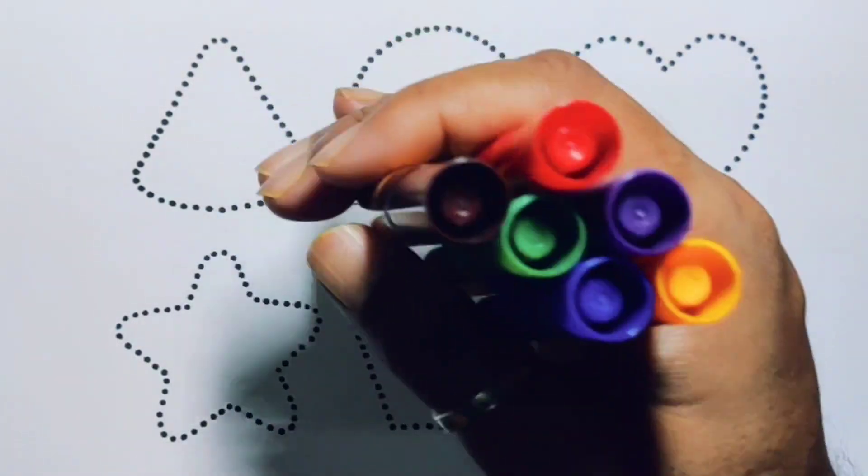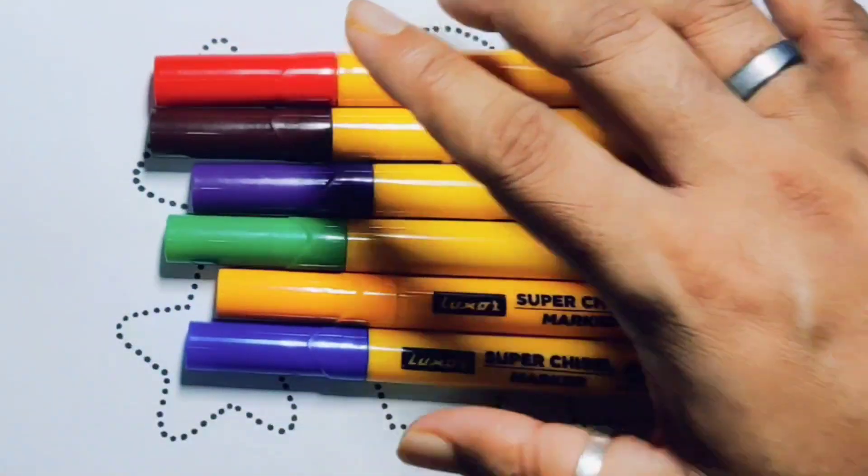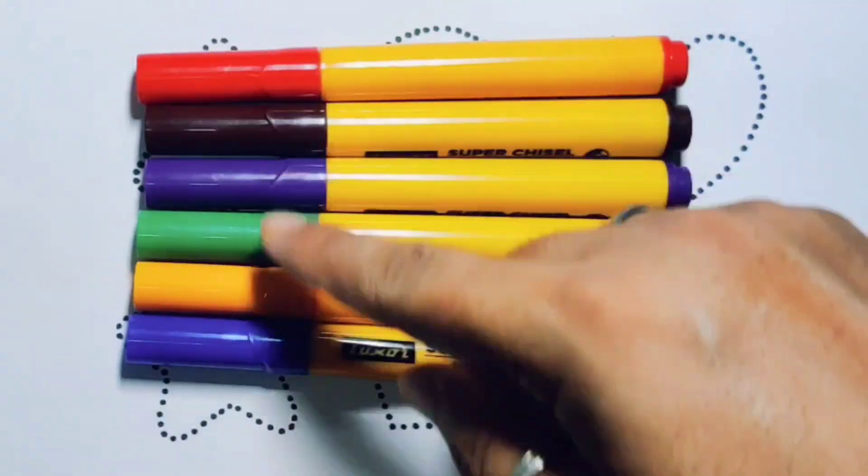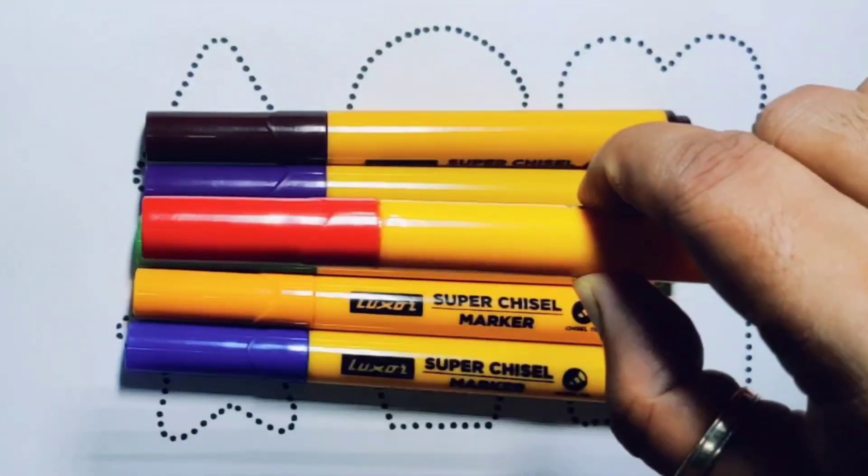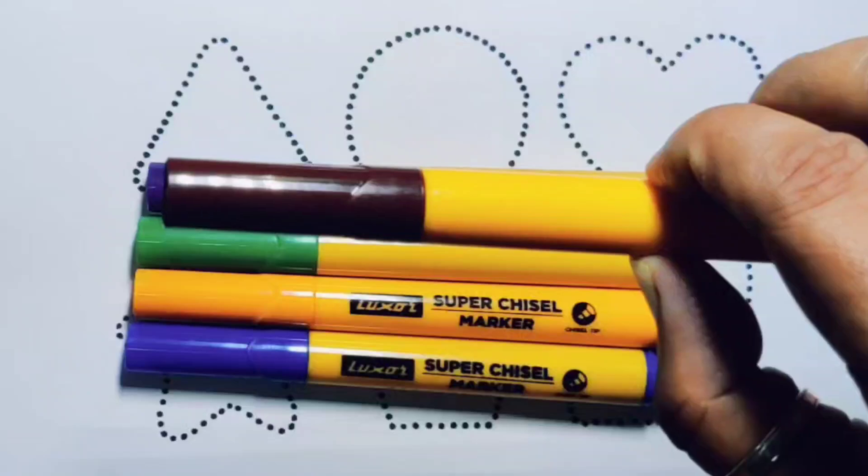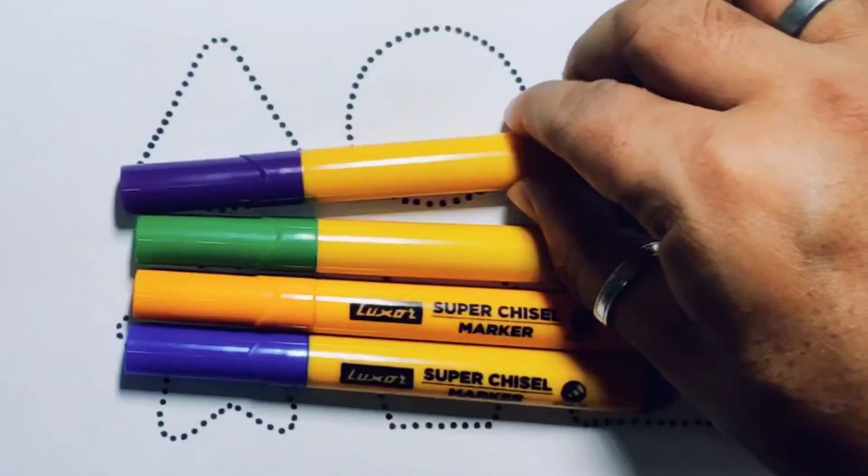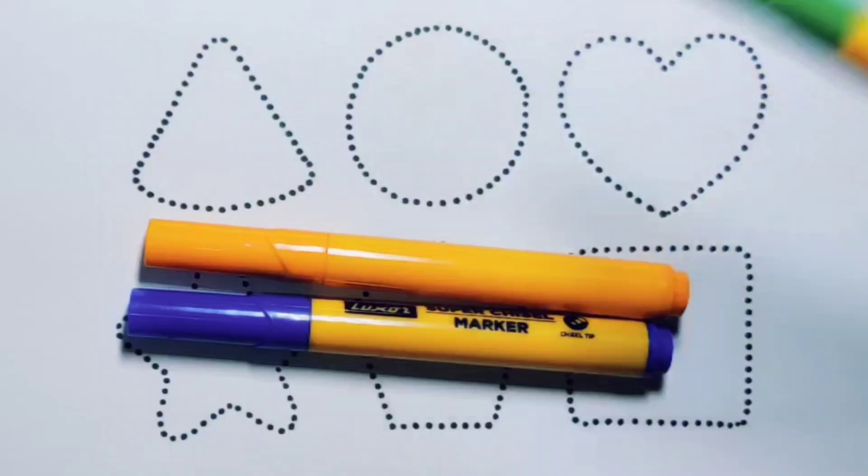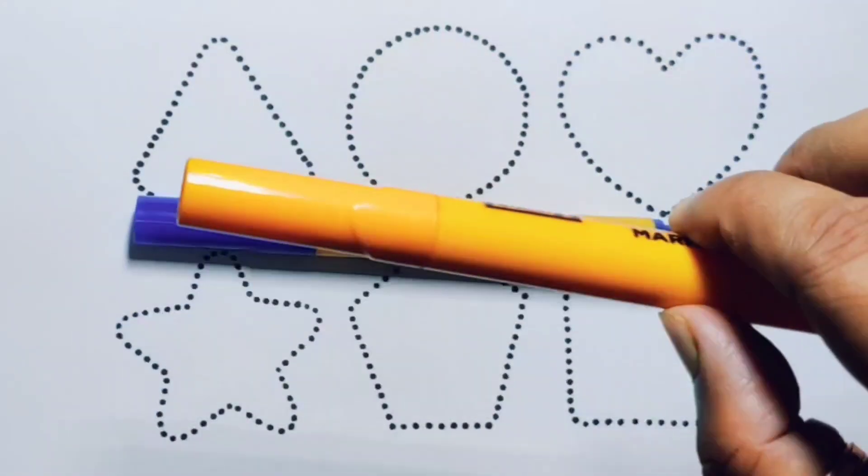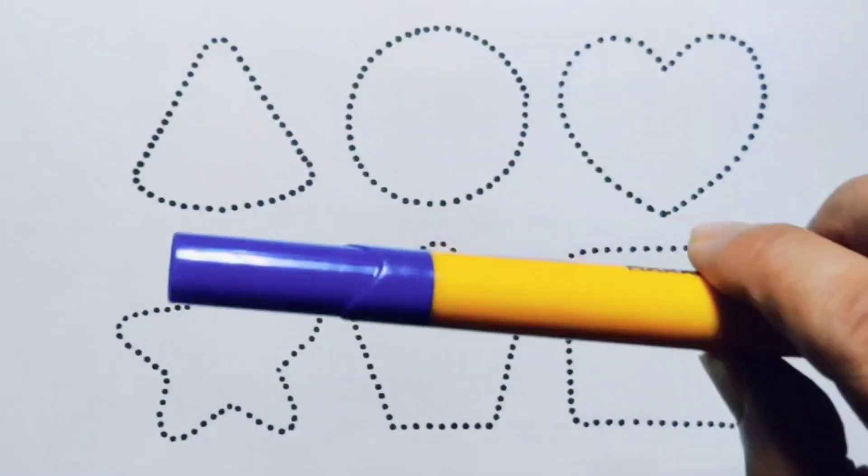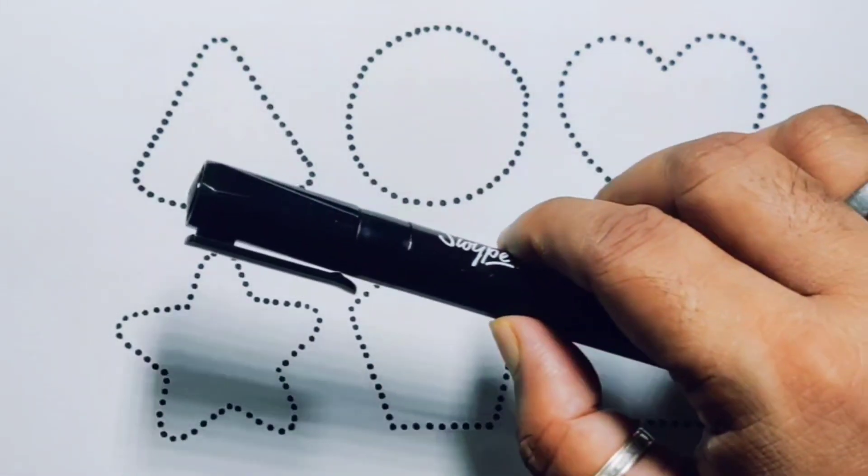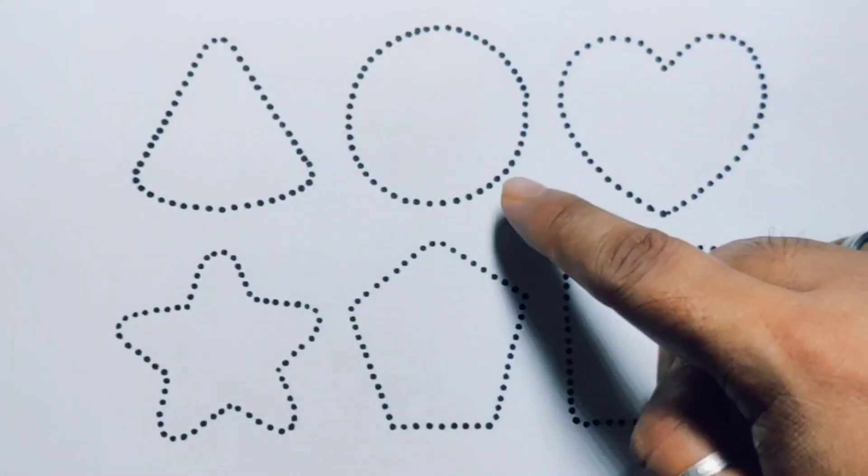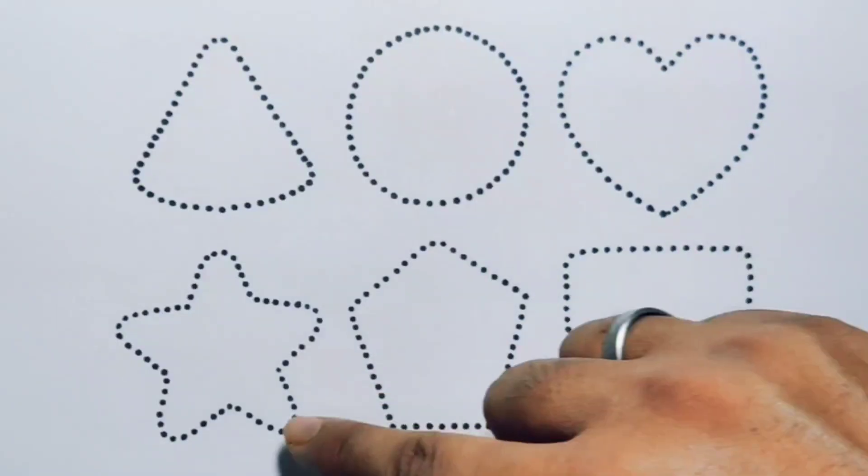Hello kids, welcome to my new video. First we're going to know the colors: red, chocolate, purple, green, orange, blue, and black. Now let's learn the 2D shapes: triangle, circle, heart, star,